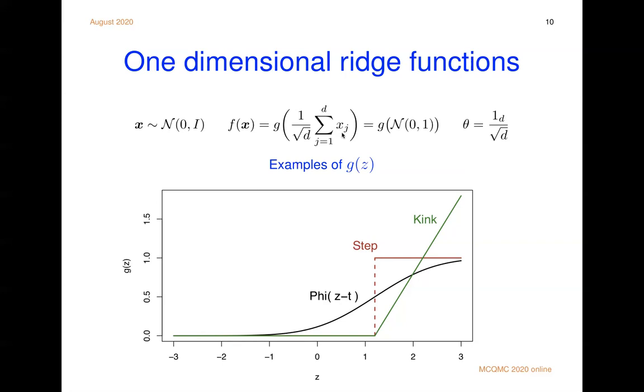Well, the first g we'll look at is a Gaussian CDF shifted by a threshold t. Now the Gaussian CDF is an extremely smooth function. We pick a t that's not zero just to rule out any weird symmetries or anything. So it's kind of a bit more general of a function than if we had made it symmetric. And then a much less smooth one is a step function. It's zero to the left of the threshold and it's one to the right.